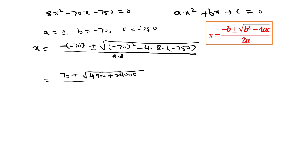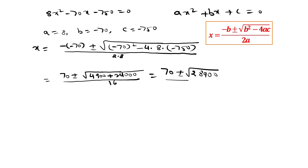So we get 70 plus or minus: 70 squared is 4900, and 4 times 8 times 750 is 24000. The sign changes as there are 2 negative signs in multiplication, all divided by 16, giving 70 plus or minus under root 28900 over 16.